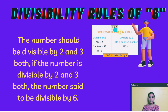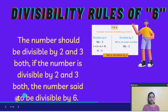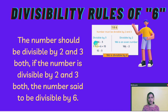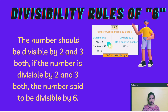Next, divisibility rules of 6. The number should be divisible by both 2 and 3. If the number is divisible by both 2 and 3, the number is said to be divisible by 6. Let's check the example: 186. If you check divisibility by 3, you add 1 plus 8 plus 6 and get 15 as the answer, and 15 is divisible by 3. And if you divide 186 by 2, it is divisible because the last digit is 6.